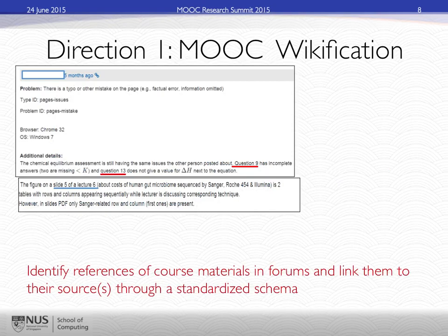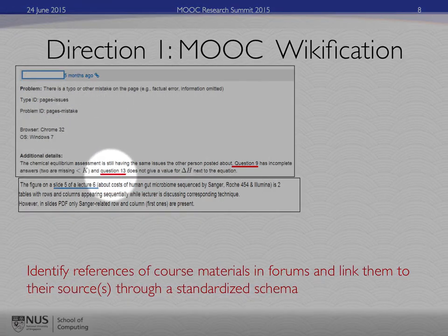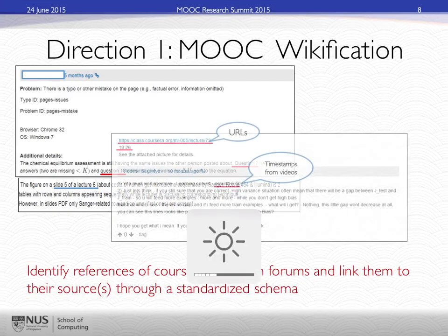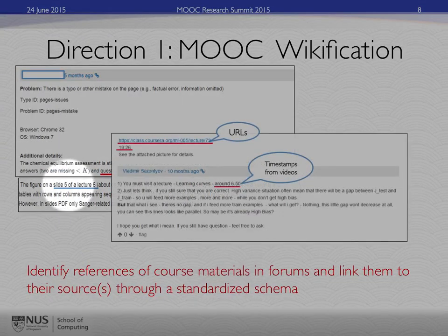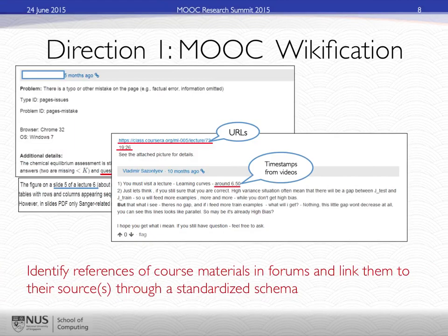In our first direction, we're looking at Wikification, which is to go over a piece of text and insert hyperlinks at the appropriate place and link them to correct resources. For example, here we can see that question 13 and slide 5 of lecture 6 can be underlined. We want to identify, using a machine, references to course materials in forums and link them to their source through a standardized schema.